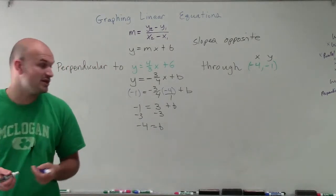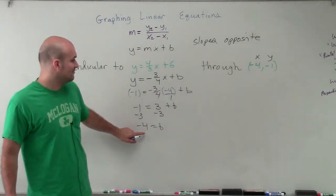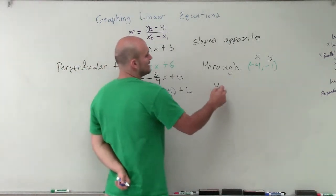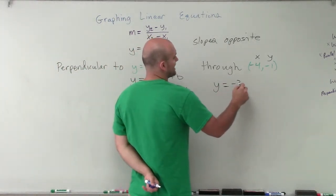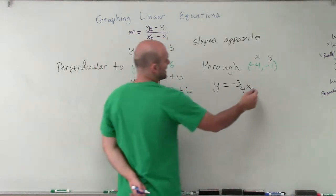So therefore, the y-intercept of my new equation is not the same as 6. It's actually equal to negative 4. Now I know, remember, I have my new slope is y equals negative 3 fourths. So I'm going to use that. So I have y equals a negative 3 fourths x, then minus 4.